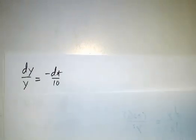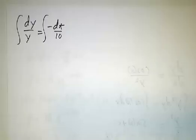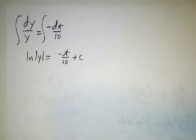So, we've got dy/dt equals minus y over 10, and we cross multiply, and we get dy equals minus dt over 10, and we integrate, and we get that the log of y is minus t over 10 plus a constant.